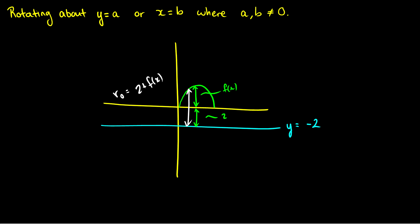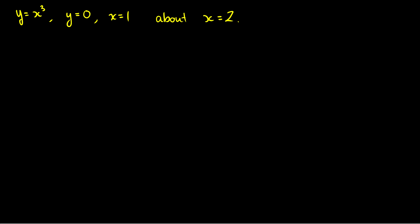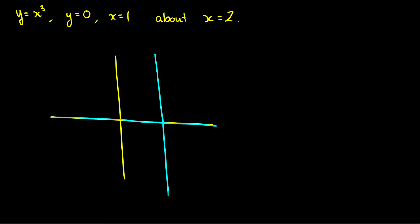Let's do a real question: y = x³, y = 0, x = 1, rotating about x = 2. We're integrating across y this time. Drawing the region: y = 0 is the x-axis, x = 1 is a vertical bound, and y = x³ goes from (0,0) to (1,1). We're rotating this region about x = 2, which is to the right of our region.